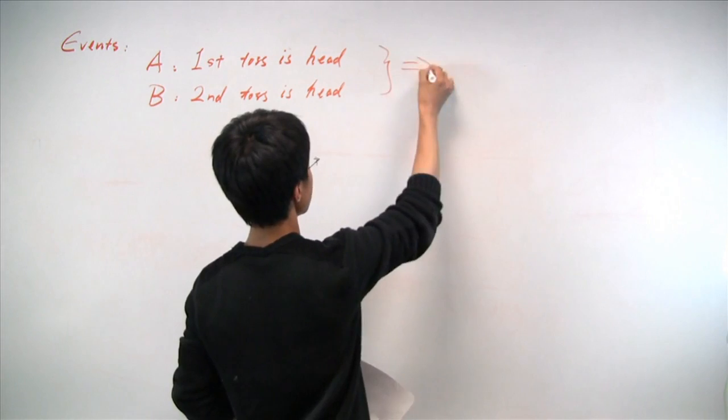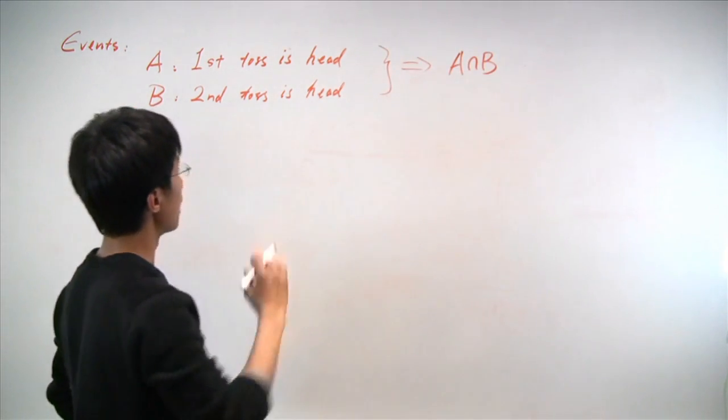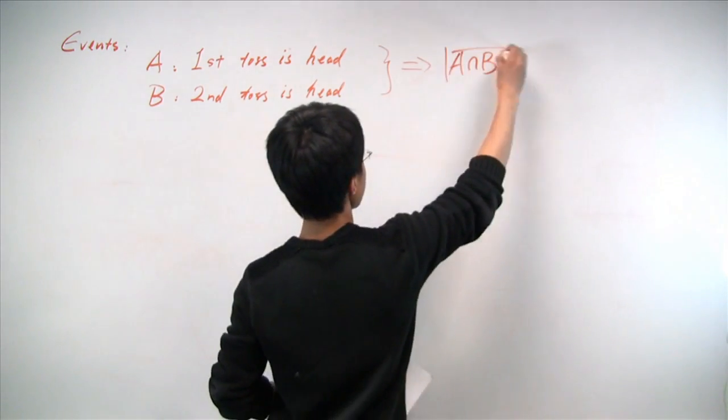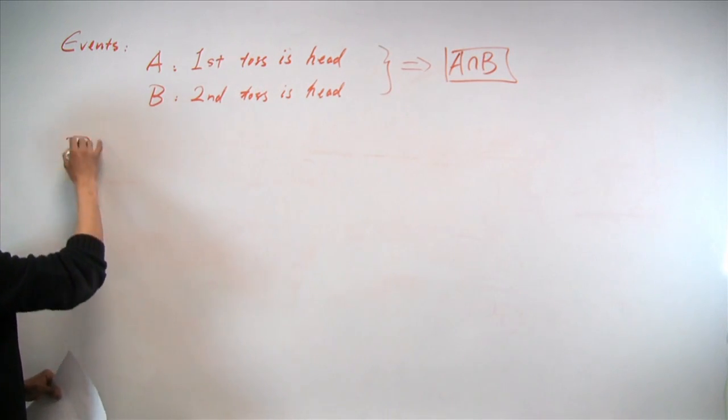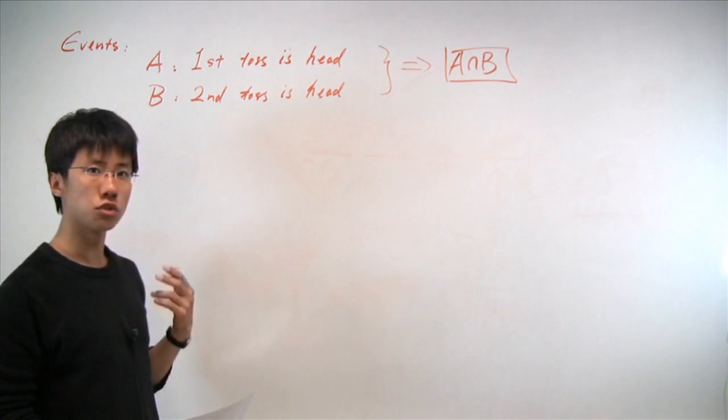Having these two events will allow us to say the event that A intersection B will be the event that both coin tosses are ahead. And we would like to know the probability of such an event. In particular, the probability of A and B will be calculated under two types of information.